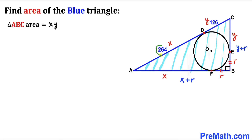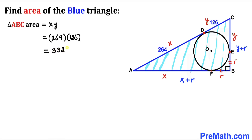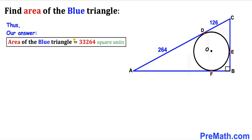We know x = 264 and y = 126. So the area of triangle ABC = 264 × 126 = 33,264 square units. Thanks for watching and please don't forget to subscribe to my channel for more exciting videos.